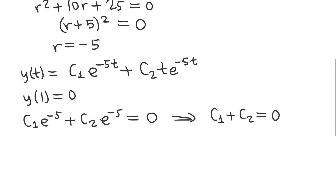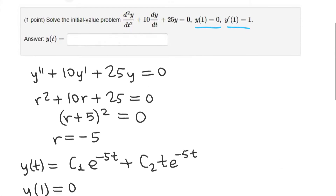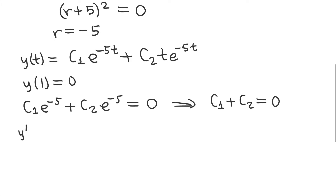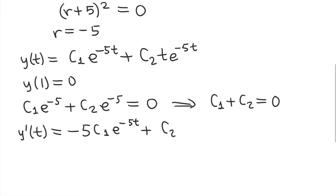We can't solve for c1 or c2 just yet, so we have to use the second condition y'(1) = 1. That means we have to find the derivative of our general solution. For the first term we use the chain rule, getting -5c1·e^(-5t). For the second term we need to use the product rule because we have t multiplied by that exponential function: first function times the derivative of the second (using the chain rule), plus the second function times the derivative of the first.